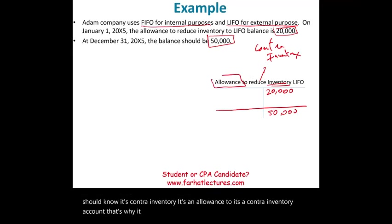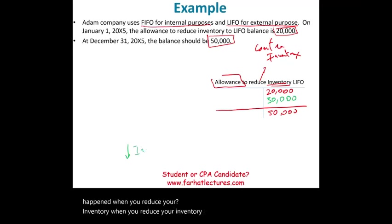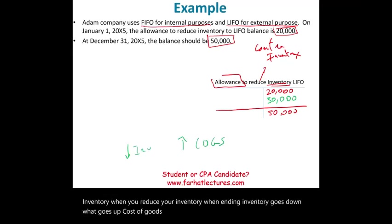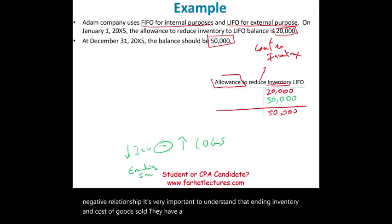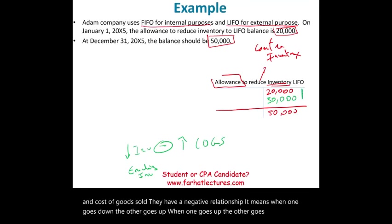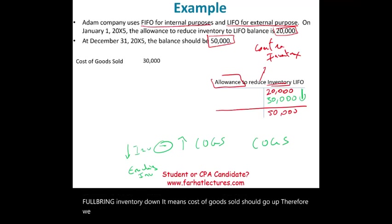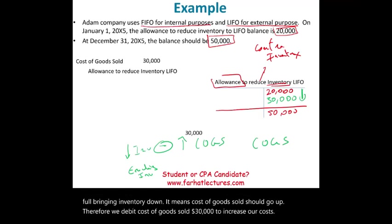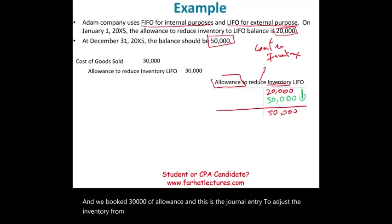From a journal entry perspective, you need to credit this allowance account an additional $30,000 — in other words, reduce your inventory by an additional $30,000. When ending inventory goes down, cost of goods sold goes up, because ending inventory and cost of goods sold have a negative relationship: when one goes down, the other goes up. So we debit cost of goods sold $30,000 to increase our cost, and we credit $30,000 to the allowance account. This is the journal entry to adjust inventory from FIFO internal record keeping to LIFO.